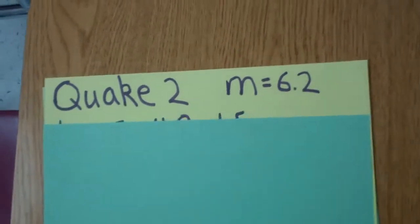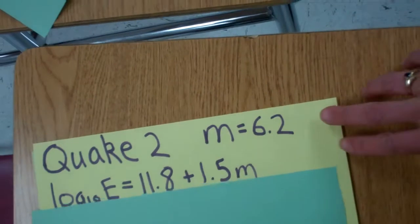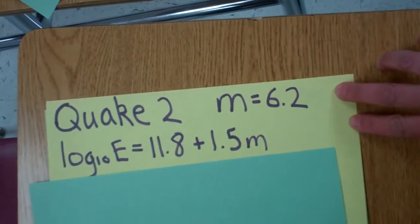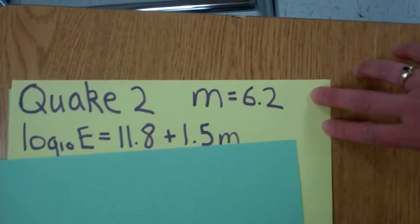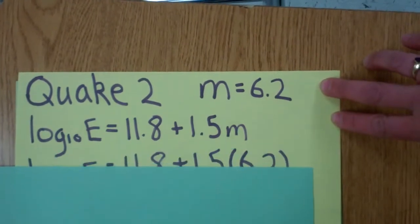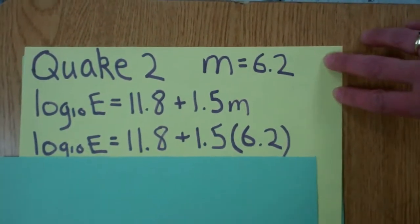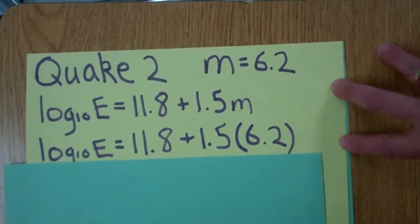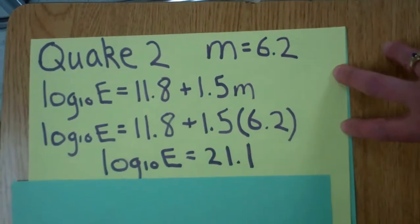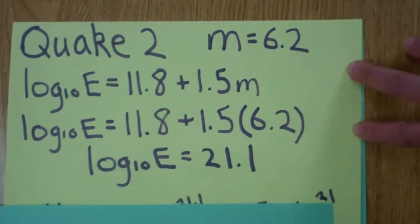In Japan Earthquake 2, we have a Richter scale value of 6.2. We take this value and plug it into our equation. We then do the math on the right-hand side and we get log base 10 of E equals 21.1.